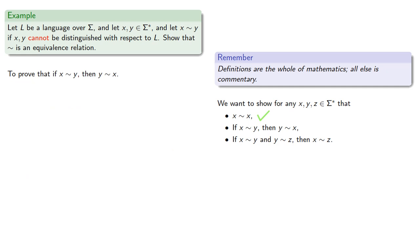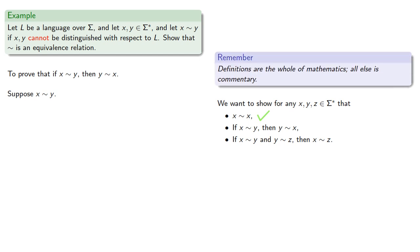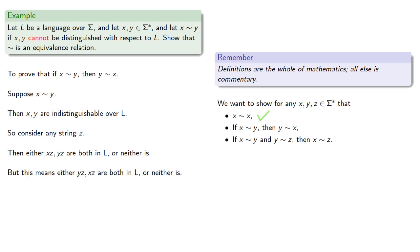Next, we want to prove that if X squiggle Y, then Y squiggle X. Remember, you can always assume the antecedent of a conditional. In other words, if you have an if-then statement, you can always assume the if portion. So suppose X squiggle Y. Definitions are the whole of mathematics, all else is commentary, so X and Y are indistinguishable over our language. Consider any string Z. Then either XZ, YZ are both in L or neither is. But this means either YZ, XZ are both in L or neither is. And so Y is indistinguishable from X.